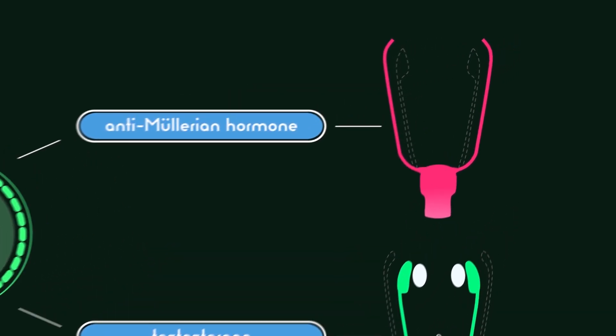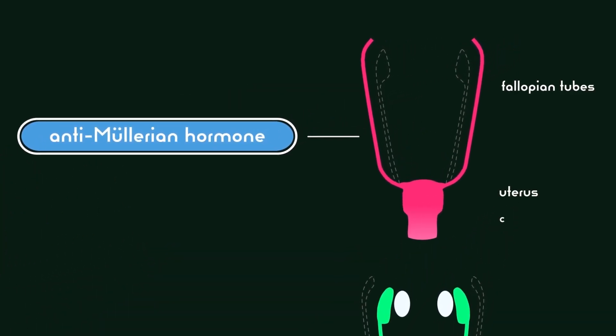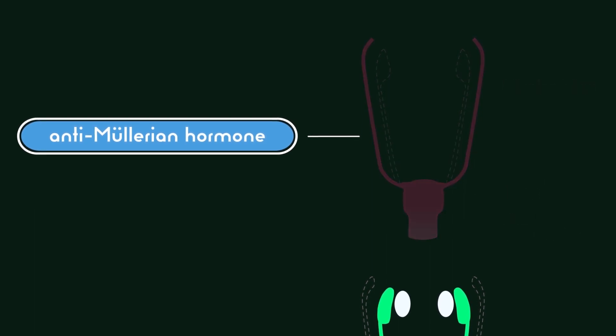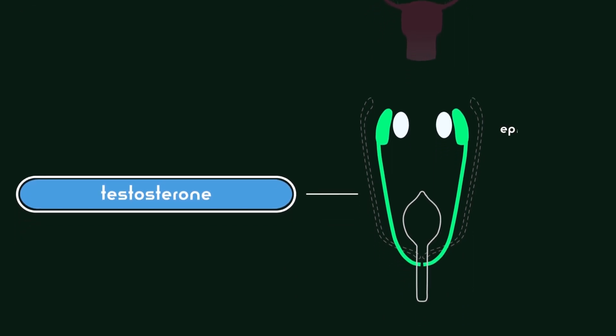the Müllerian structure, which forms the fallopian tubes, uterus, cervix, and upper part of the vagina, disintegrates. And the Wolffian structure, which forms the epididymis, vas deferens, and seminal vesicle, develops.